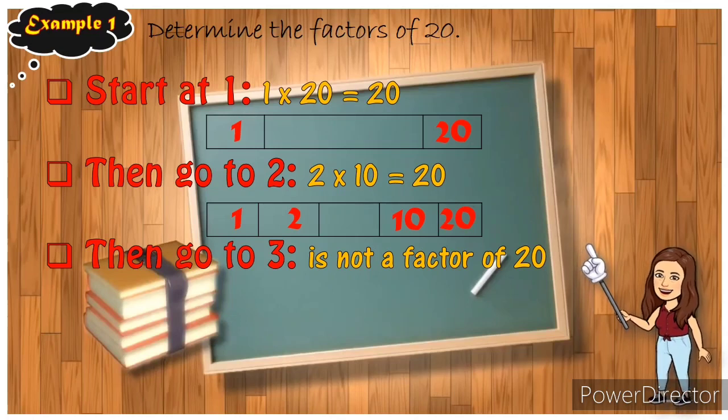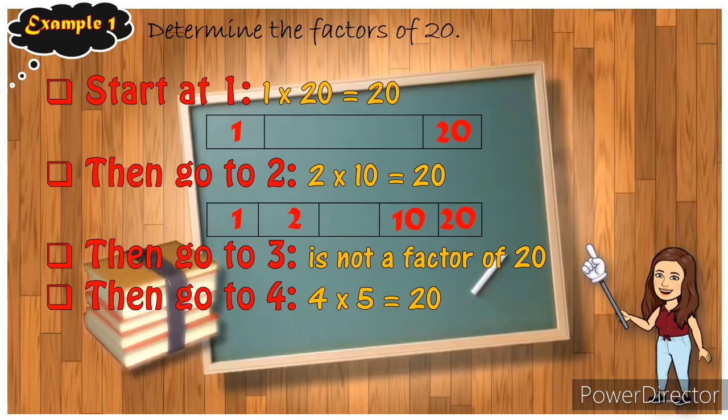Then go to three. Very good, three is not a factor of 20, so let's proceed to four. Can you think of a number multiplied by four where the answer is 20? Yes, very good, four times five equals 20. So let's have again our table. We have one, 20, 2, 10, and let's add four. Four is next to two and five before 10. Let's proceed to five. Five is already in the table, so let's go to six, seven, eight, and nine. Six, seven, eight, and nine are not a factor of 20, so we're done.